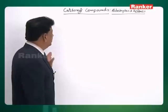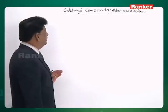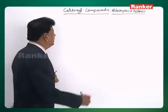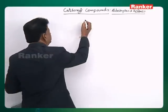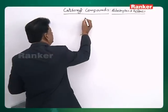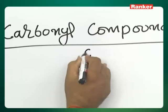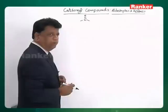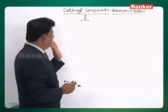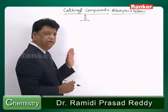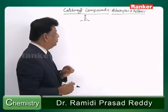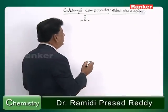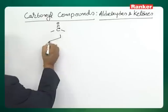Let us take the next topic, that is carbonyl compounds. Carbonyl compounds have a functional group C double bond O. However, this carbonyl group may have different types of groups attached to it. Based on these groups, they are classified into two types.